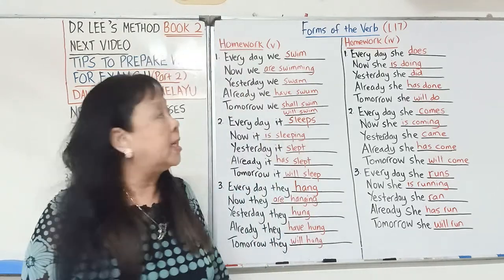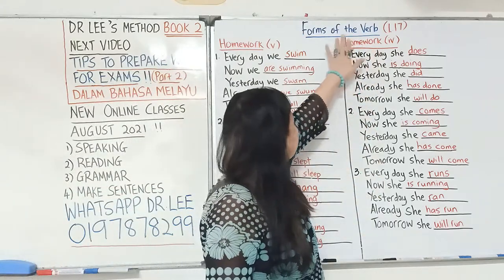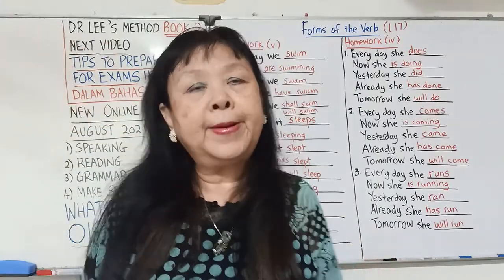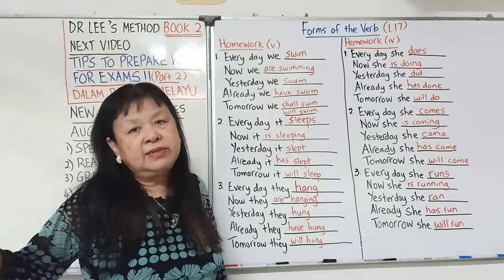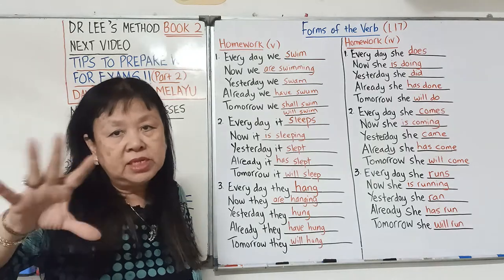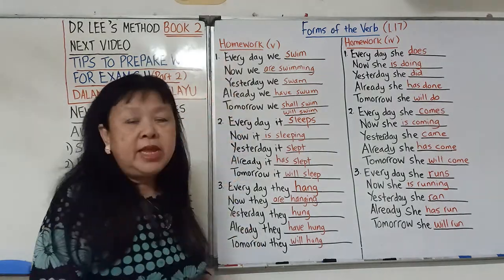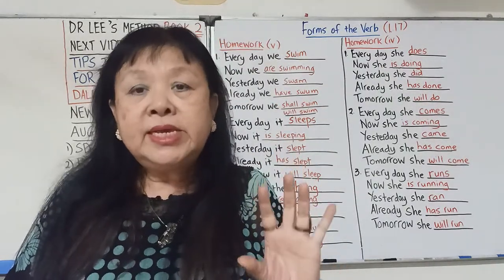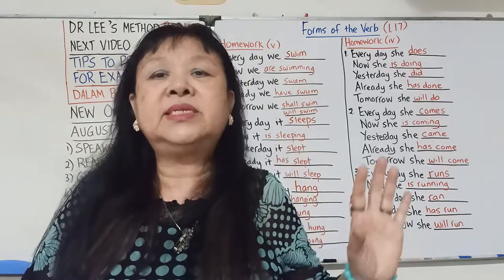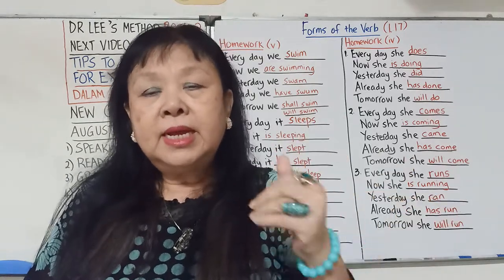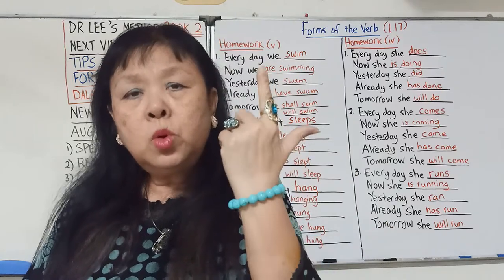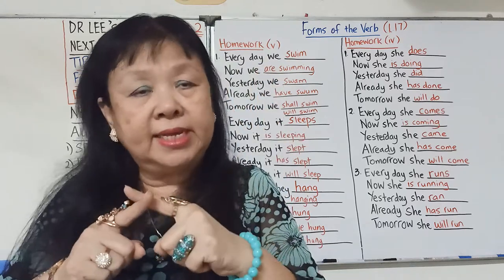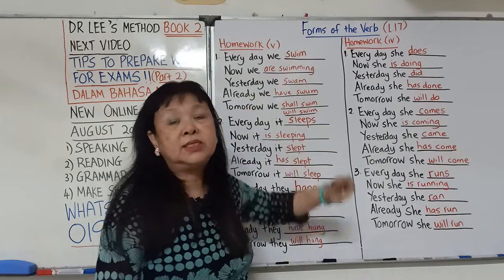今天也是最后一个练习。新的一个video就是新的一课，第十八课。现在是第十七课，它的题目叫做Forms of the Verb，就是动词的不同形状。动词会一直改变，好像Sing、Sang、Sung，Walk、Walked、Walking，它会一直变动。Every day we swim，当我们用every day，在语法我们叫它simple present tense。